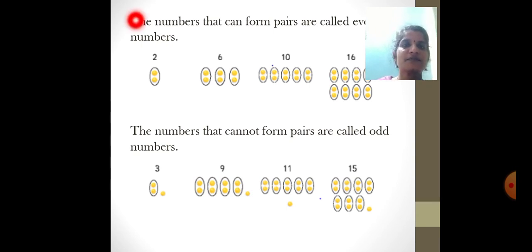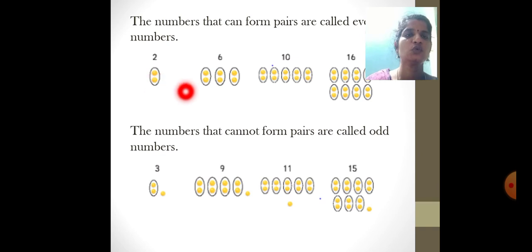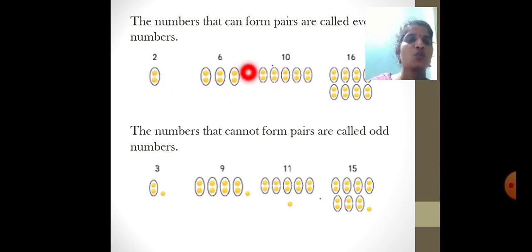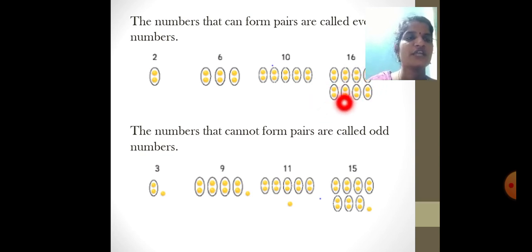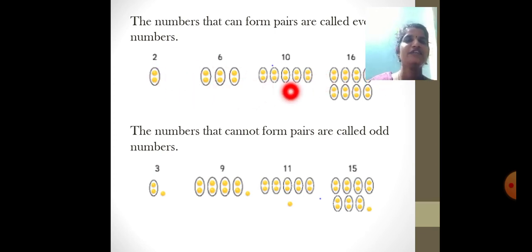The numbers that can form pairs are called even numbers. The numbers making a pair are called even numbers. Here you can see: 2, 4, 6, and 8 biscuits all pair up completely with no biscuit left. So these are paired — even numbers.